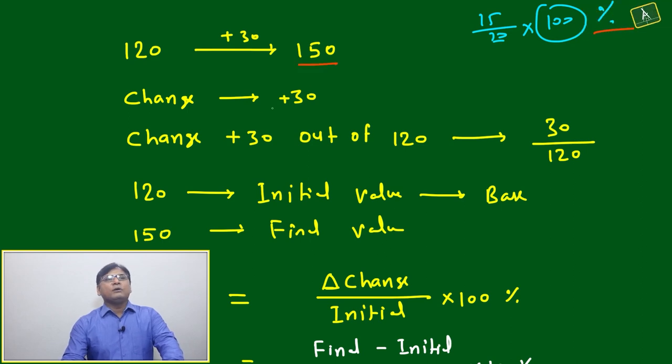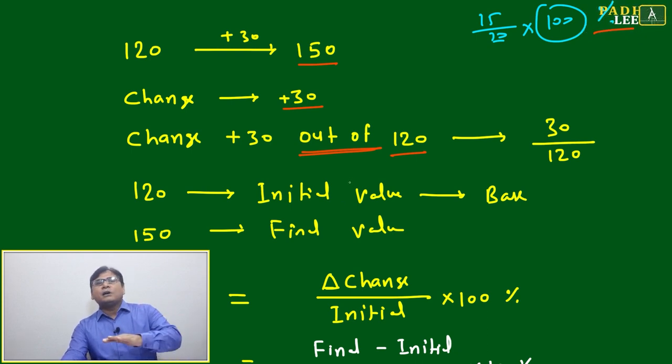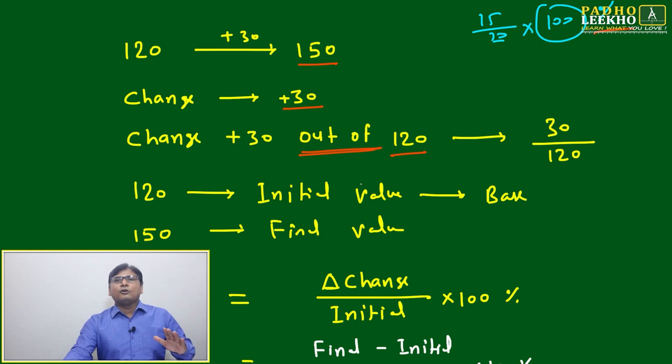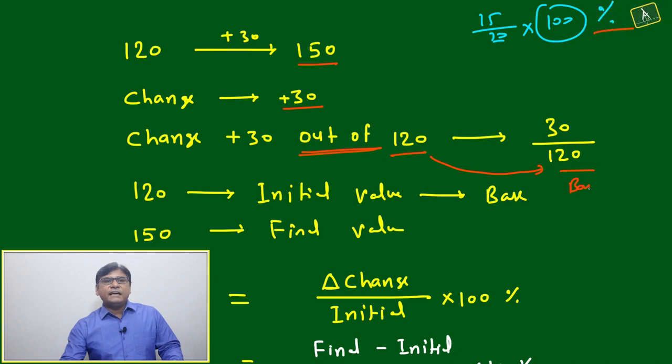120 is changed to 150, then the change is plus 30. Change plus 30 out of 120. The initial value will always come in the denominator, or you can say it is the base. Always be careful about the base.